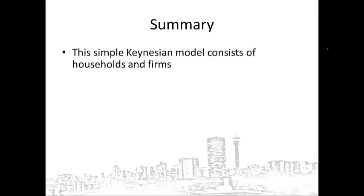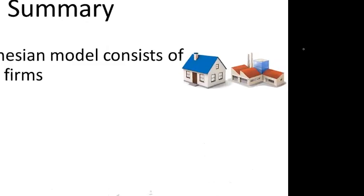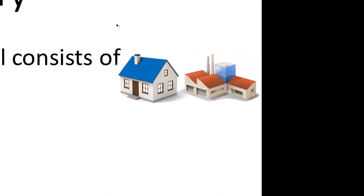This simple Keynesian model consists of households and firms. This means that aggregate spending in the economy is equal to consumption spending plus investment spending.